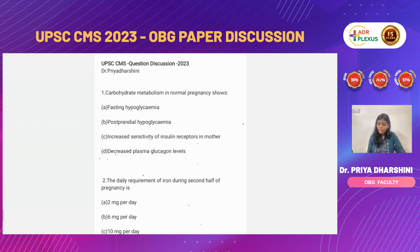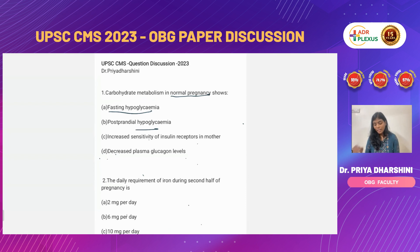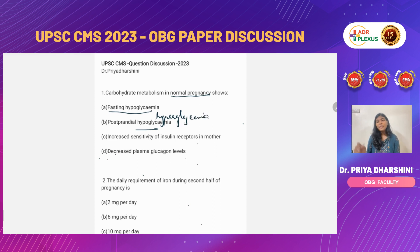The first question is: carbohydrate metabolism in normal pregnancy shows what? The confusing thing is 'normal pregnancy.' Normal pregnancy itself is diabetogenic, which means whatever is seen in diabetes also applies to normal pregnancy. So in pregnancy, it is always fasting hypoglycemia and post-prandial hyperglycemia — this happens even in normal pregnancy because pregnancy is a diabetogenic state.